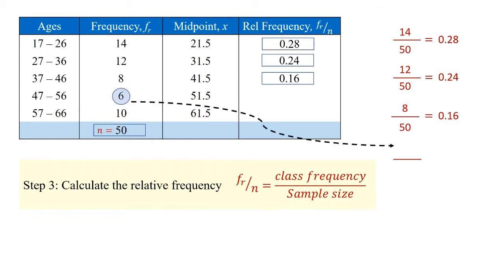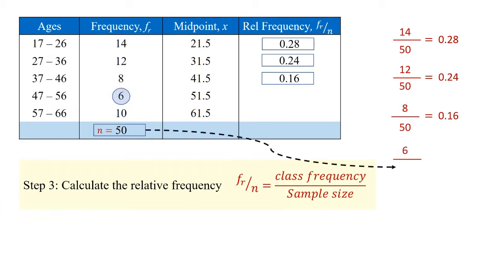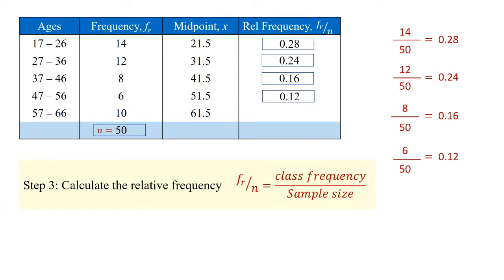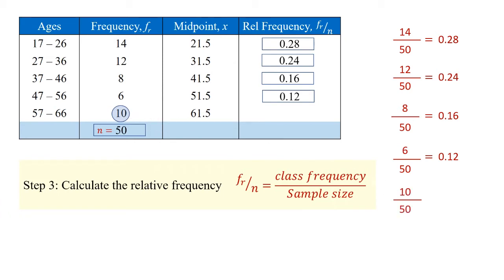For the fourth group, we have 6 people, which represents 0.12 or 12% of the total. Finally, we have 10 people between the ages of 57 and 66, and they represent 0.20 or 20% of the total.